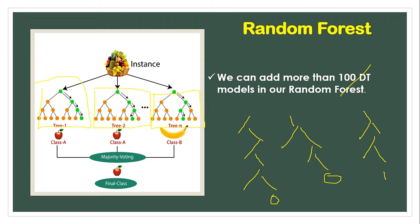Let's say you have three trees and a bunch of fruits to classify. The first tree predicts apple, the second tree predicts apple, and the third tree predicts banana. The majority of decision trees vote apple, so the final output is apple. This is how majority voting works in random forest.